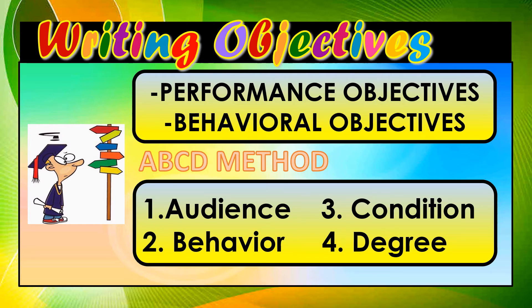The audience is the learner who will demonstrate the behavior under specific conditions and to an acceptable degree. The behavior is what the learner is expected to be able to do — it must be observable and measurable. The condition, if any, describes the circumstances under which the learner will exhibit the behavior.